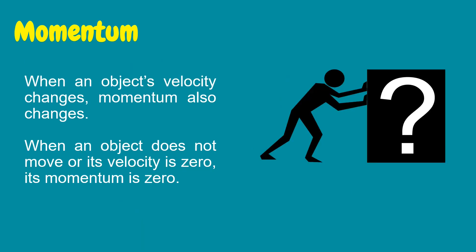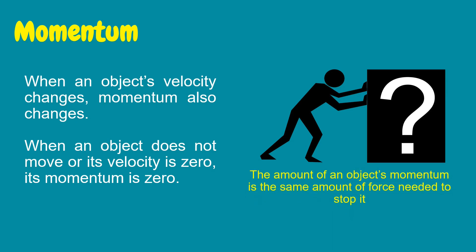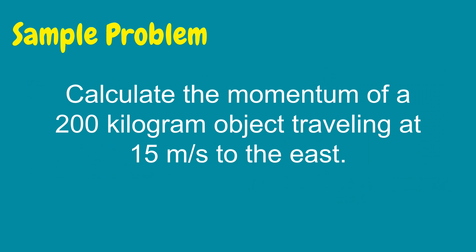When an object's velocity changes, momentum also changes. When an object does not move or its velocity is zero, its momentum is zero. The amount of an object's momentum is the same amount of force needed to stop it. To apply the concept of momentum, let's solve this sample problem.